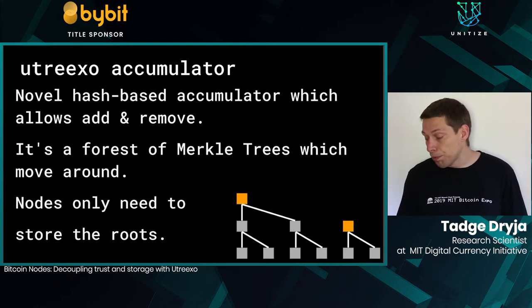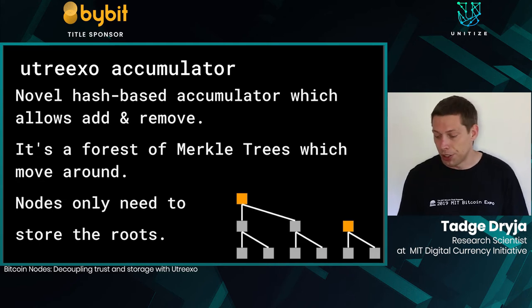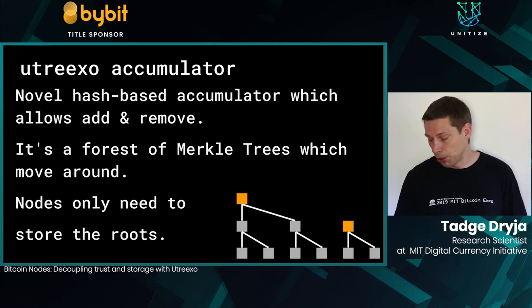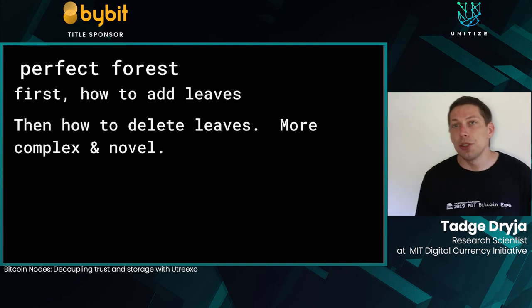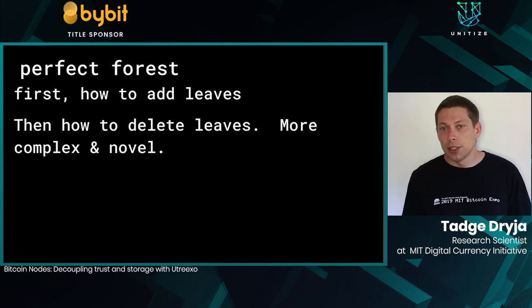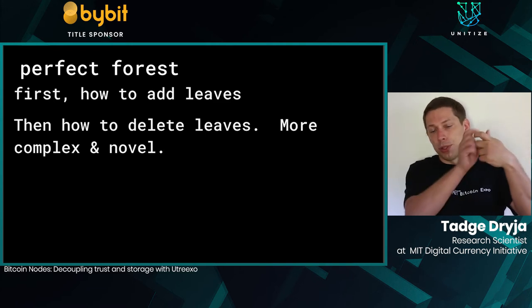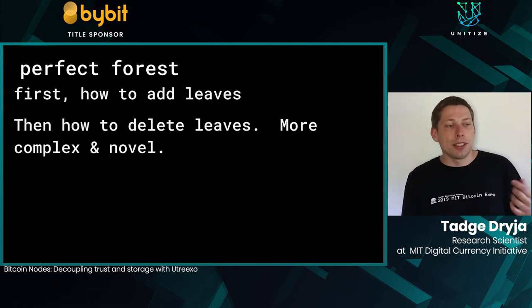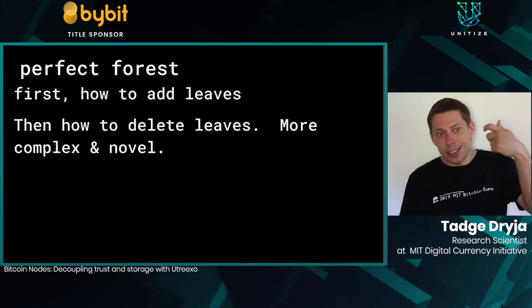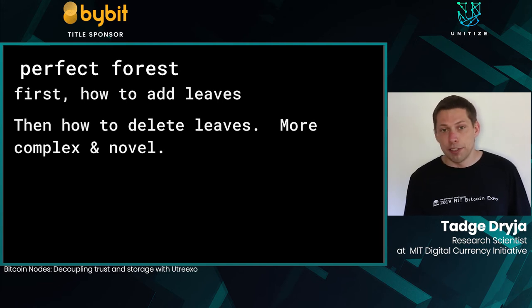The actual design of this accumulator is quite simple — basically a forest of Merkle trees that move around in an interesting way. These UTXO nodes only need to store the roots of these Merkle trees. In a normal Merkle tree, if you only know the root, you can't add a new node and recompute the root because you don't know how many things are in it. So instead, you have a forest of perfect trees.